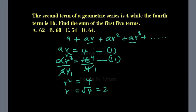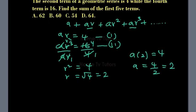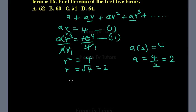If we substitute 2 for r in equation 1, we have a times 2 equals 4. a equals 4 over 2, because we divide both sides by 2. So we have a as 2.